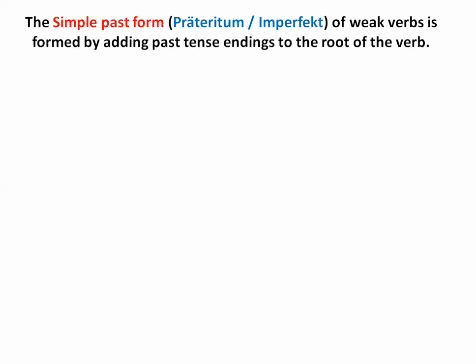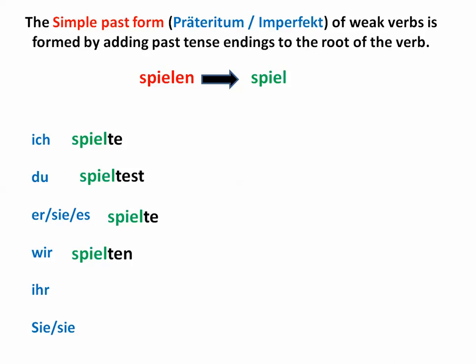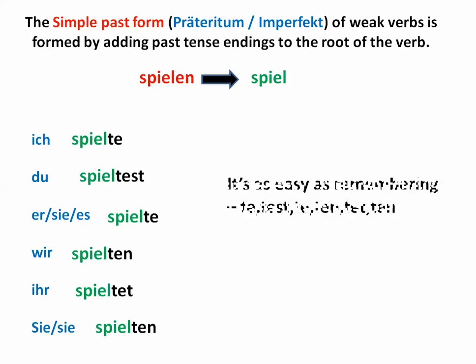The simple past, or Präteritum — sometimes referred to as the imperfect — of weak verbs. When you have a weak verb in German, you find its root by dropping the -ien or -n. For example, spielen — the root is spiel. To form the simple past, add the endings: -te, -test, -te, -ten, -tet, -ten. So: Ich spielte, Du spieltest, Er spielte, Wir spielten, Ihr spieltet, Sie spielten.